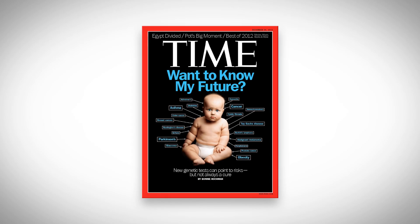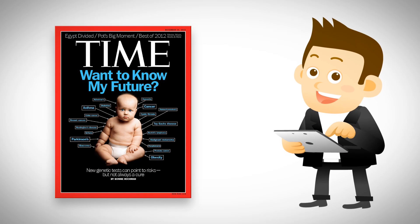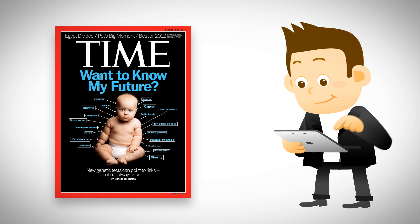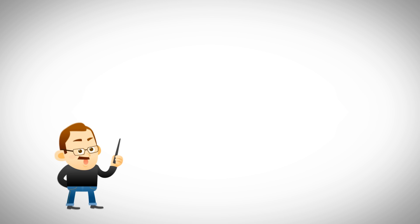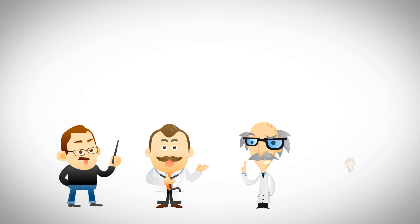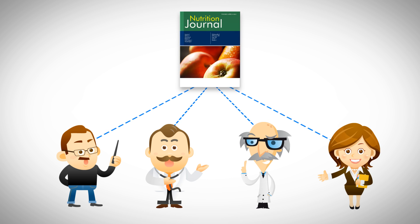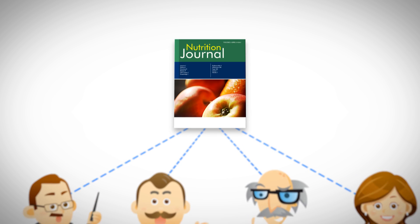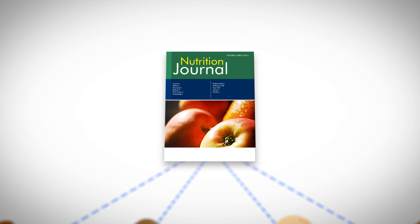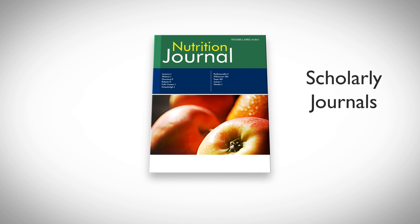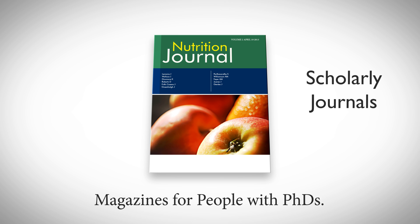Think of a magazine. Reporters who discover important information share it with the world by writing news articles for publications like magazines. People like your professors, doctors, scientists, and other highly educated professionals also write articles. Articles by scholars are found in publications called journals. You can think of journals as magazines for people with PhDs.